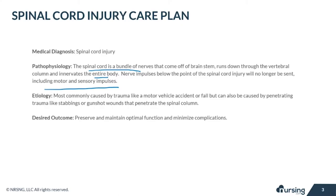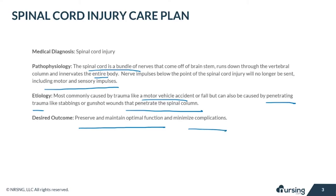Spinal cord injuries are most commonly caused by trauma, like a motor vehicle accident or a fall. They can also be caused by penetrating trauma, like a stabbing or even a gunshot wound — anything that penetrates the spinal column. The goal or desired outcome is to preserve and maintain optimal function and minimize any complications of the injury.